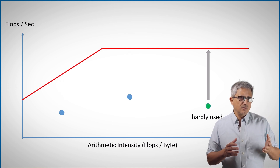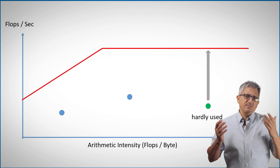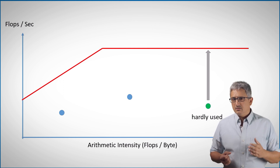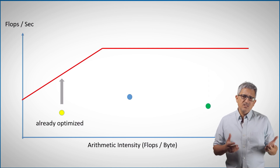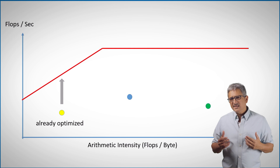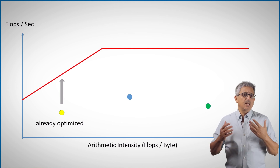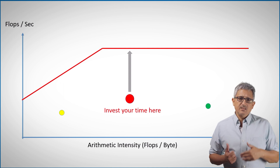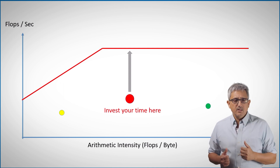Theoretically, each of these functions could be improved all the way up to the roof. But this function is hardly used and improving it won't help the overall program performance much, so the advisor colors it green. This function is already highly optimized, so to optimize it further is a big effort, so it is colored yellow. And this function is colored red, as the advisor advises us to invest our time here.